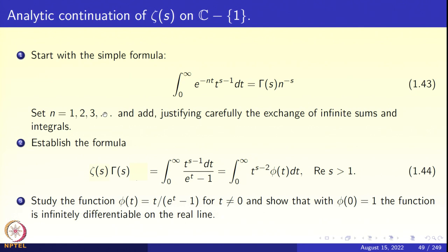I am going to put n equal to 1, 2, 3, etc. and add. You have the task of justifying carefully this exchange of integration and infinite sums. On the right-hand side I get Γ(s)·ζ(s). So I have proved that Γ(s)·ζ(s) equals the integral from 0 to infinity of t^{s-1}/(e^t − 1) dt. The summation when you put n = 1, 2, 3 and add simplifies to 1/(e^t − 1).